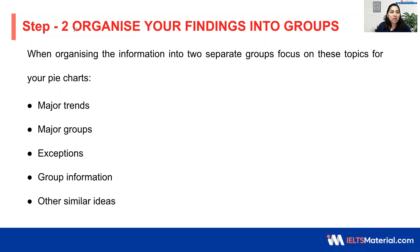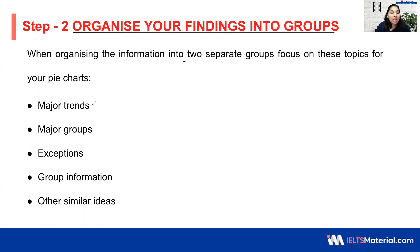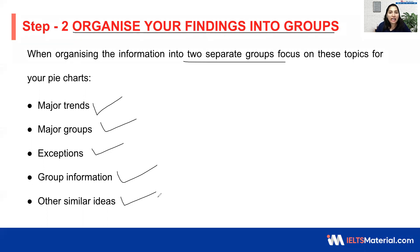Moving on to step 2, it is organizing your findings into groups, that is into paragraphs. Once you have all the information and have separated the groups, focus on the major trends, the major groups, the exceptions — that is other ideas or statistical figures — and group similar information together. In short, you will be finding the highest, the lowest, the contrasting ideas and the comparative ideas, and all these have to be taken into two different paragraphs.